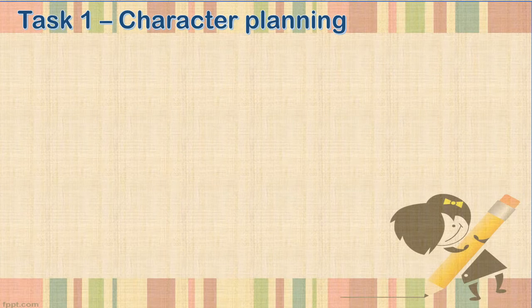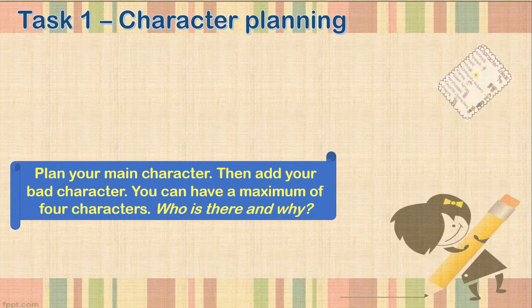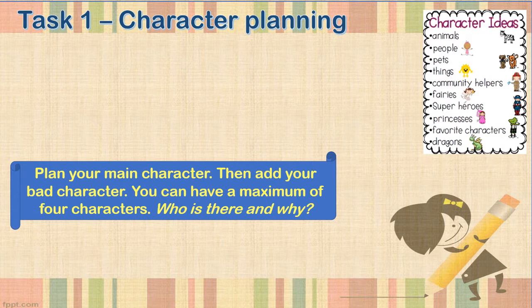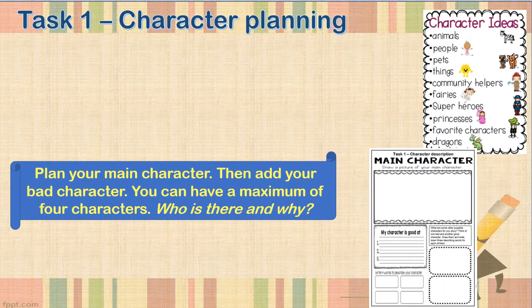We're going to start task one now — planning your character. First of all, you plan your main character, the one the whole story revolves around. Then you'll be adding your bad character, the one who's causing your trouble. And then you can add one or two extra characters. I want you to have a maximum of four characters in your story. There are some ideas of different kinds of characters you could have — just read through them by yourself. And there will be your character planning sheet, which I'll explain to you in just a moment.